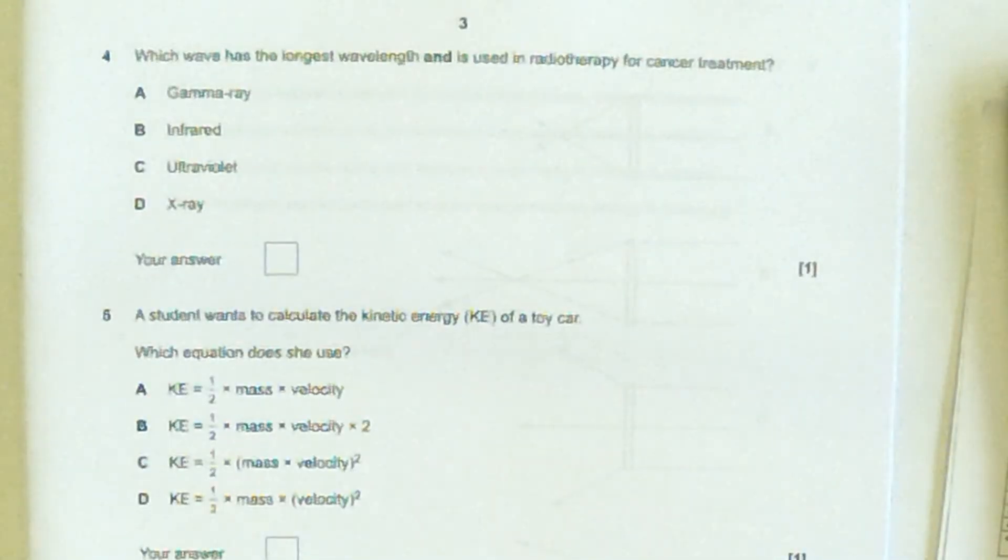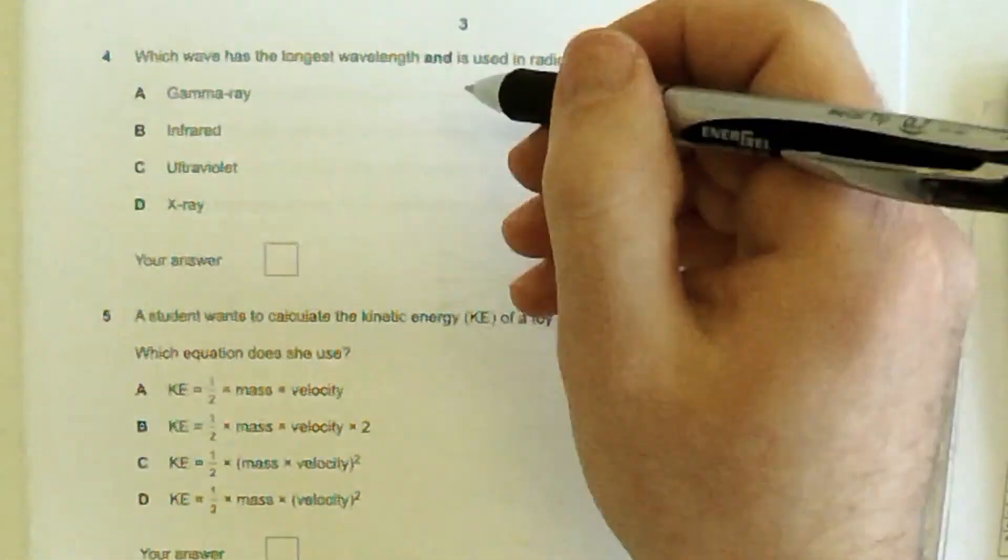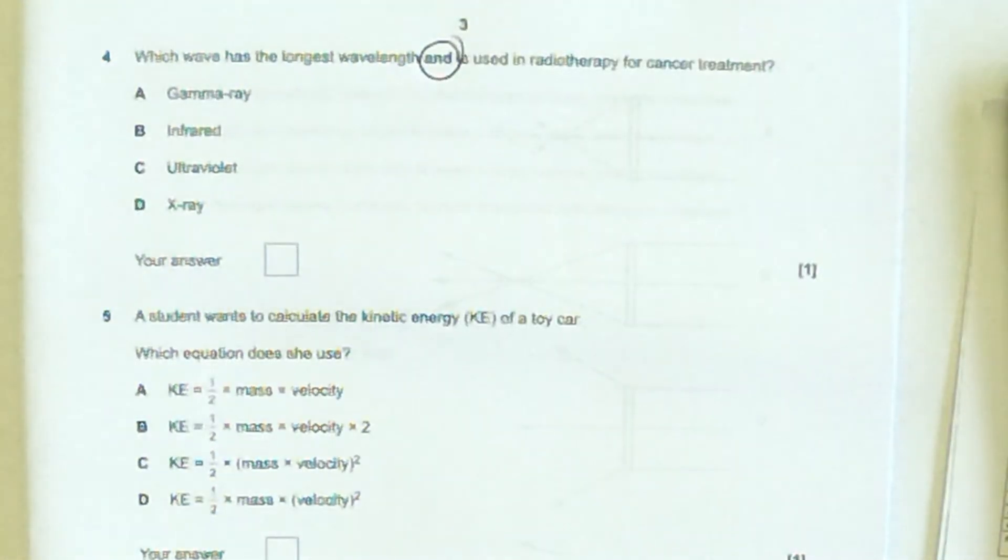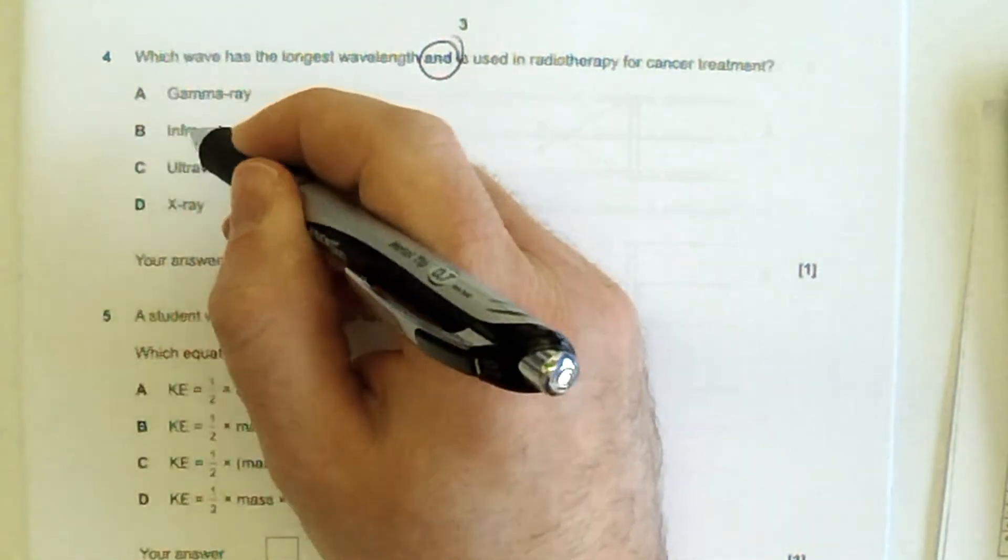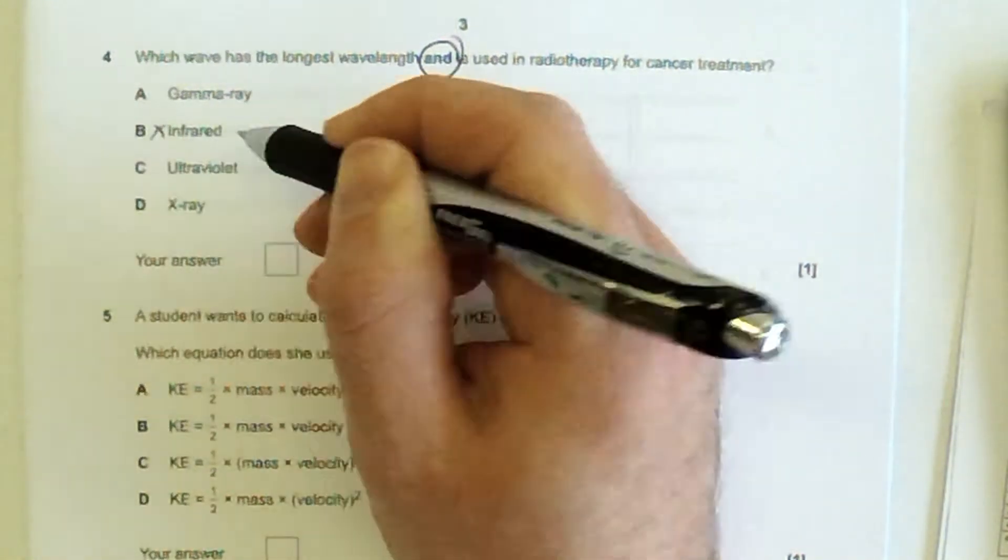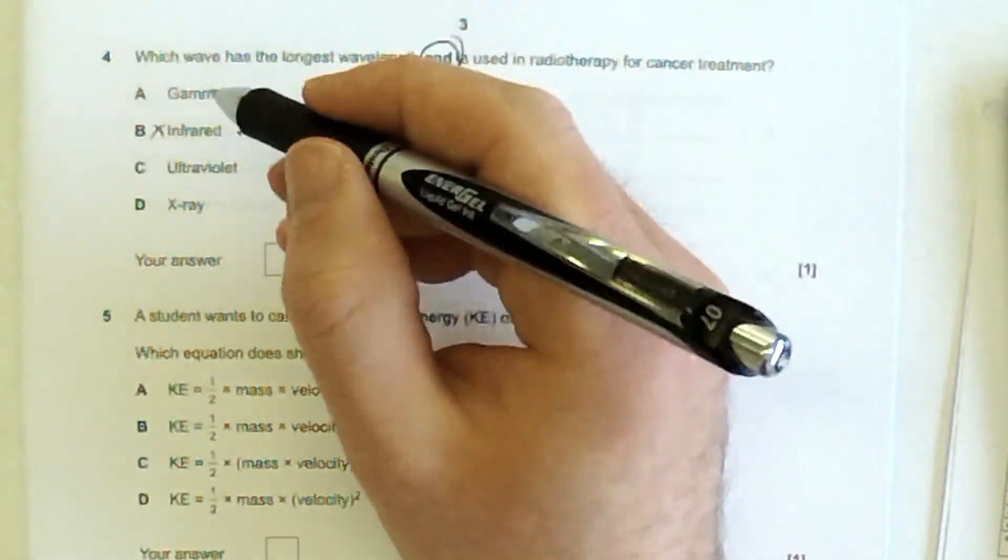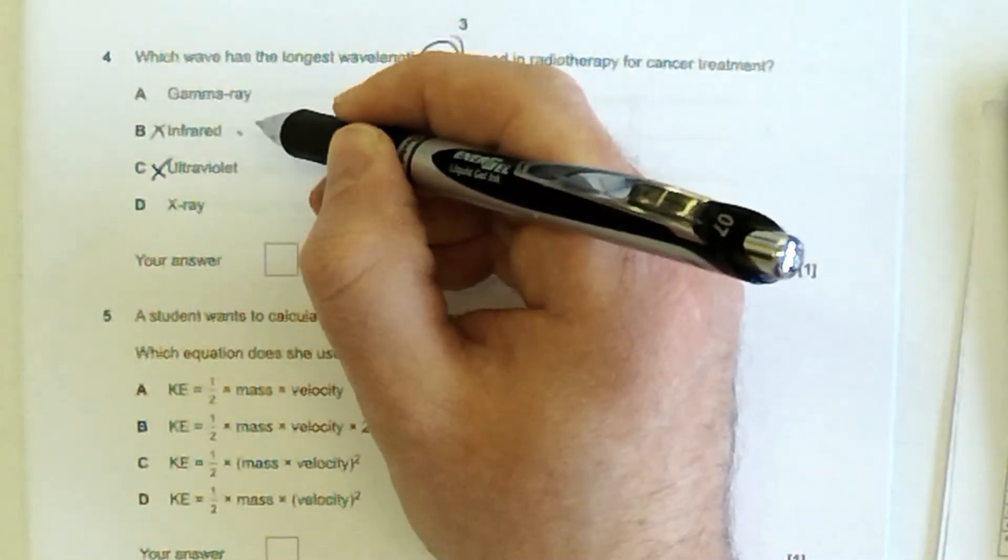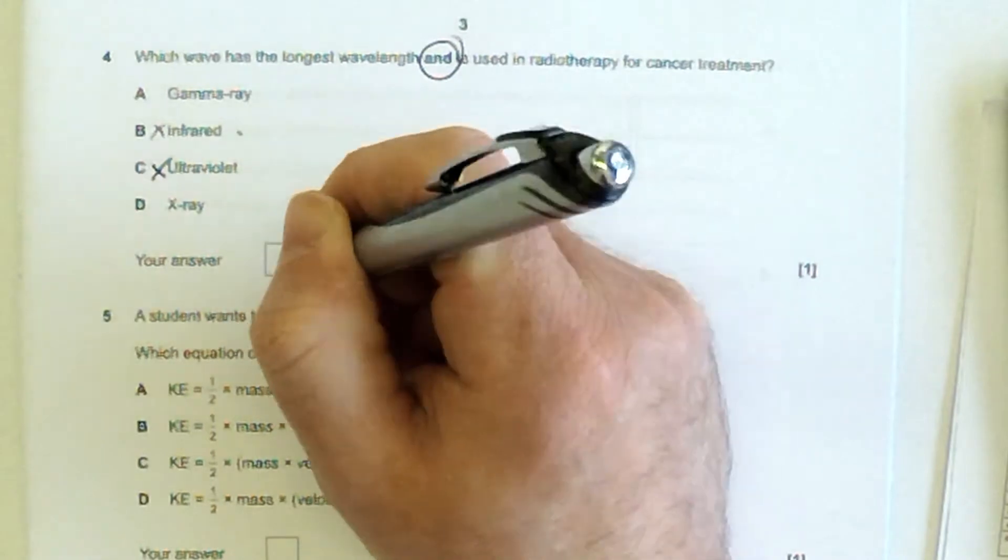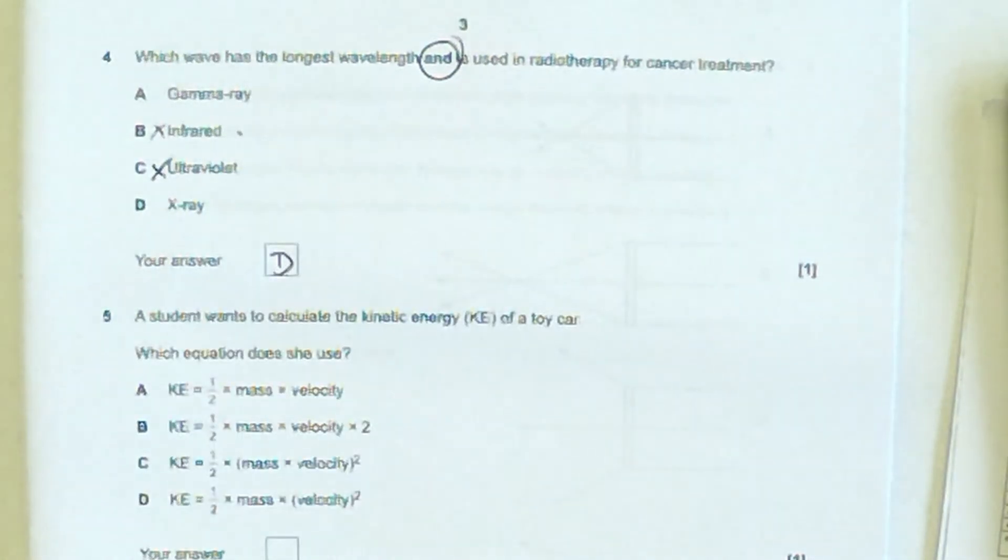Which wave has the longest wavelength and is used in radiotherapy for cancer treatment? So what's tricked pupils up here is that word, 'and'. Which is the longest wavelength in the whole thing is B, right? But infrared is not used in cancer treatment, so neither is ultraviolet, so that's gone as well. Gamma ray or x-ray? Well, x-ray has a longer wavelength than gamma rays, so it's got to be D.